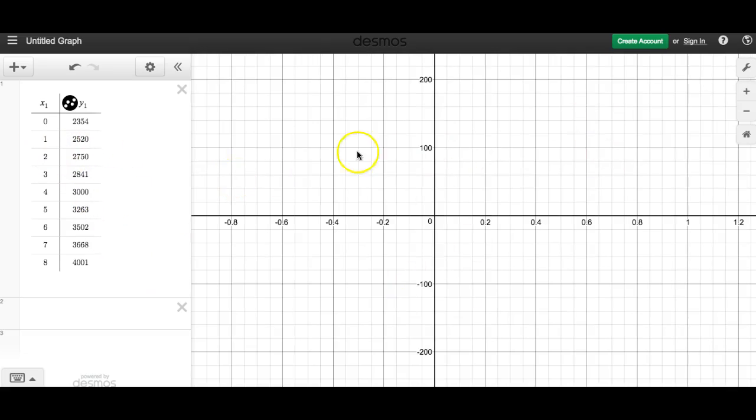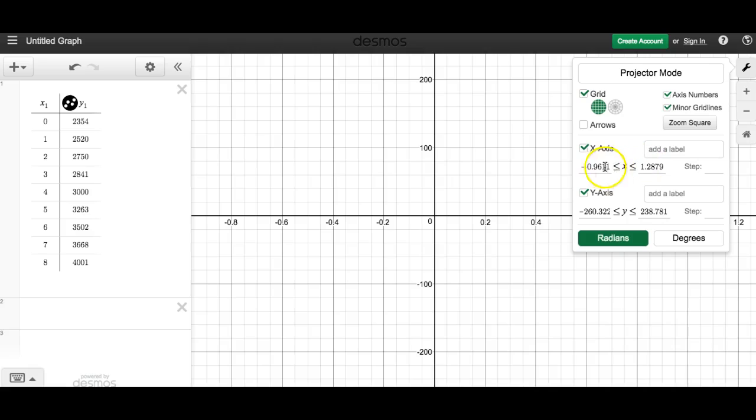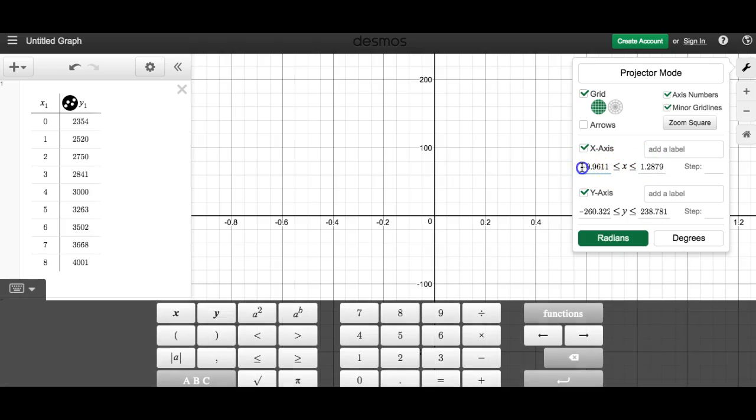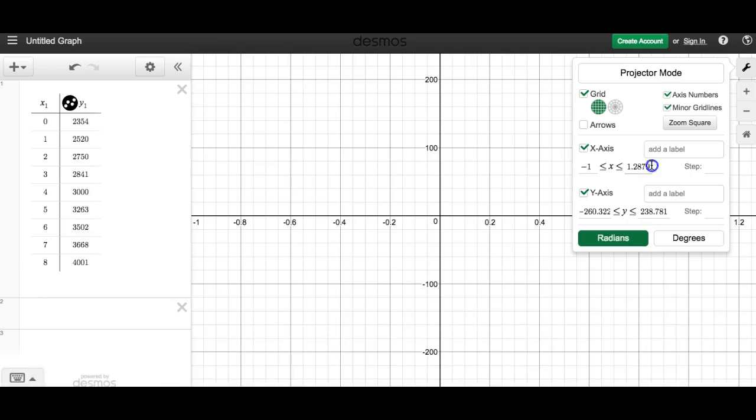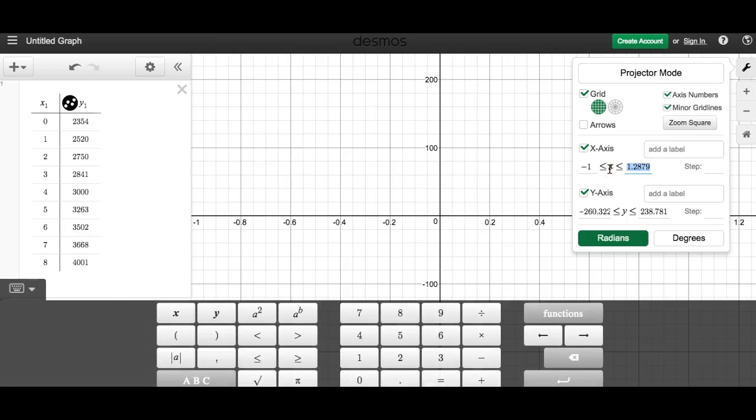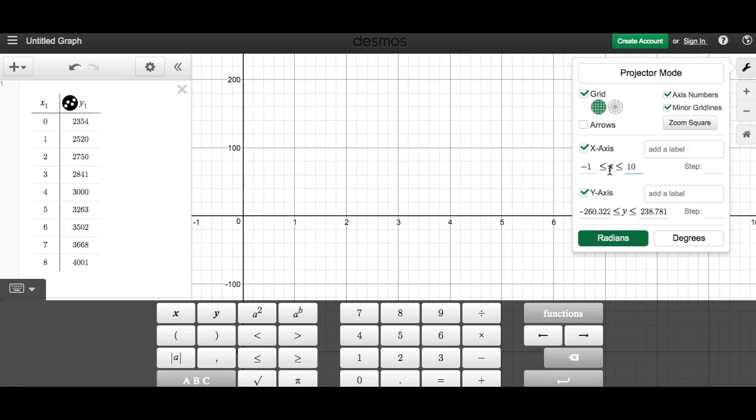The first thing we should notice is there's no data right here on the graph. That's because the window is wrong. So of course X is going to go from 0 to 8 and Y is going to go from about 2,000 to 4,000, somewhere around there. So I'm going to adjust. Let's put X at negative 1 and we'll go all the way up to 10 or something like that.